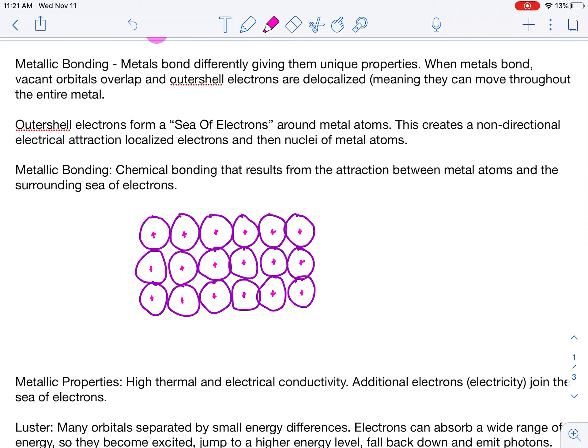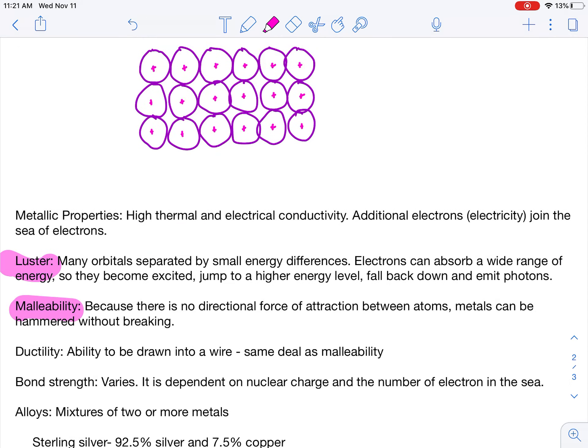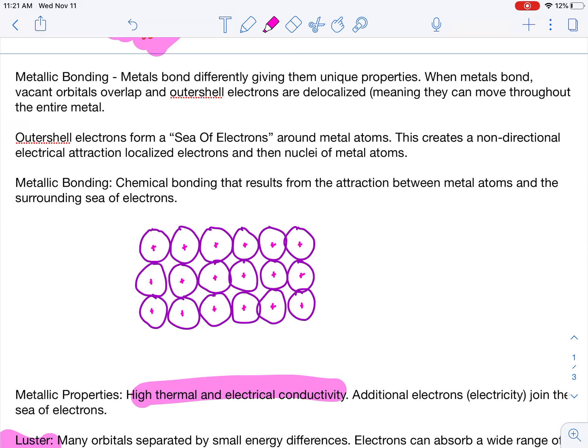All right, let's jump into metallic bonding. So, metallic bonding is totally different. The bond itself gives very unique properties to metals. So, when we think of metals, we think about, you know, like luster, malleability, ductility, just in general, high thermal conductivity. How all that is possible is due to the actual bond itself. When metals bond, vacant orbitals overlap, and valence electrons become delocalized, meaning they can move around. They form what we call a sea of electrons around metal atoms.